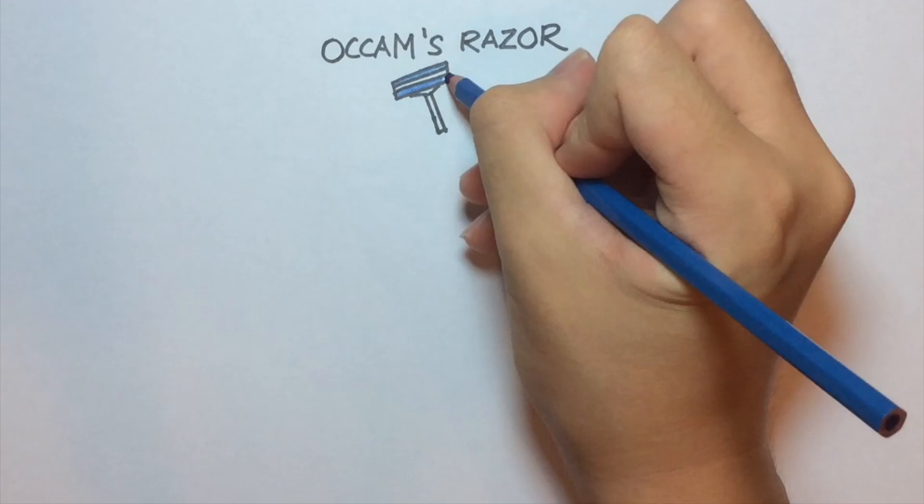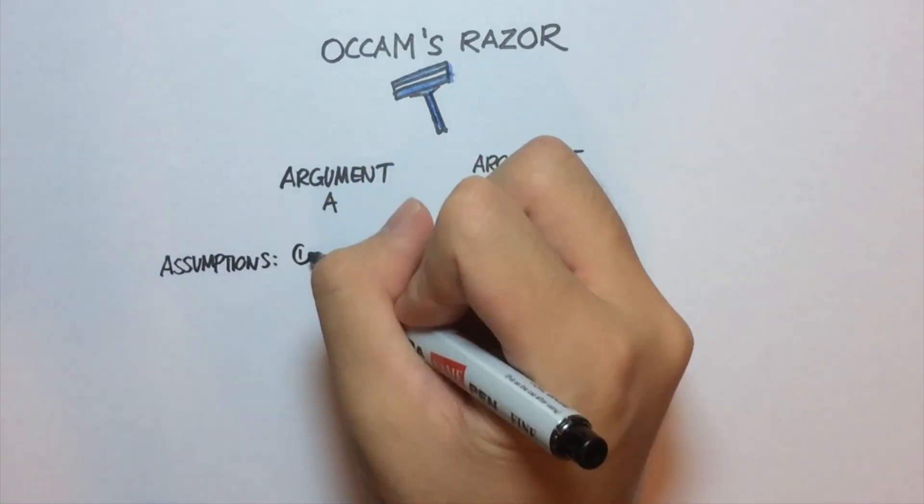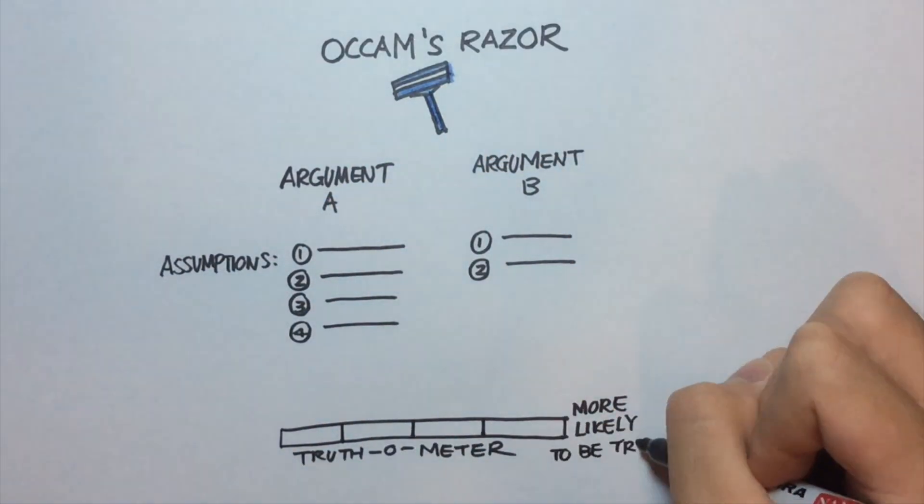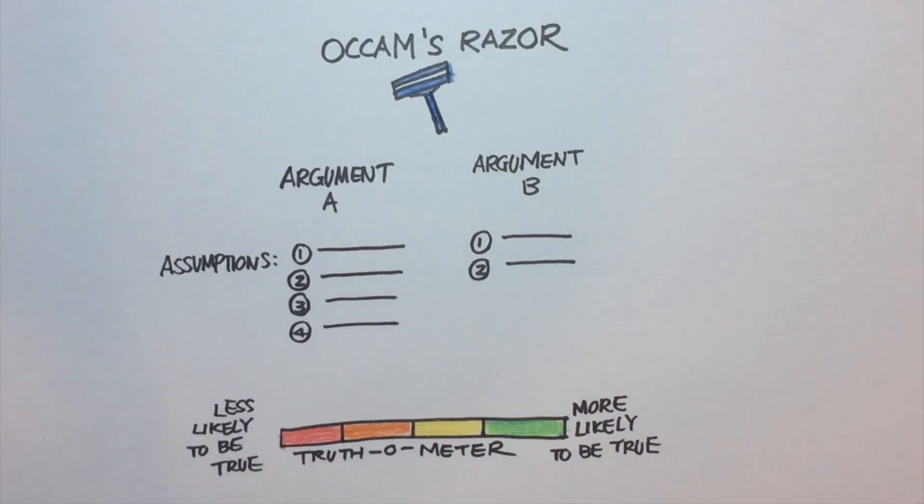Occam's razor, a method of deciding between two explanations, suggests that the explanation with fewer number of assumptions is more likely to be correct. There is no particular need for the existence of a deity to explain the cause of the universe if we cannot explain the cause of the deity. It would be adding more assumptions and raises more questions than it answers compared to the alternative.